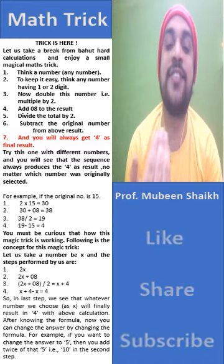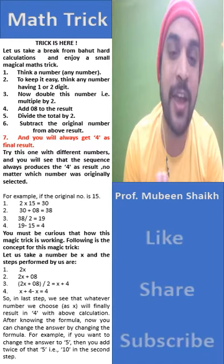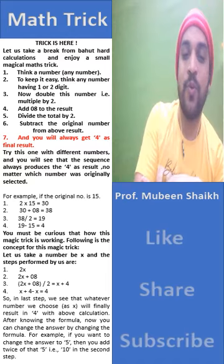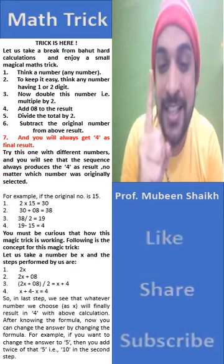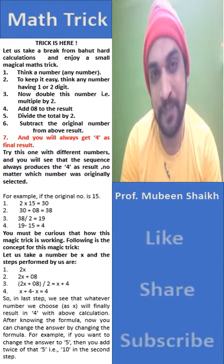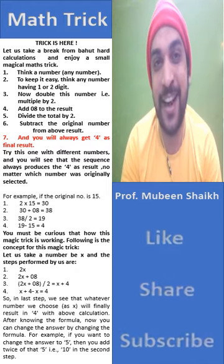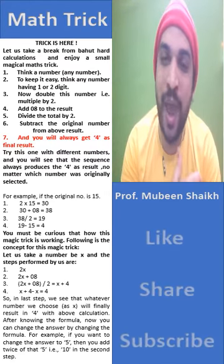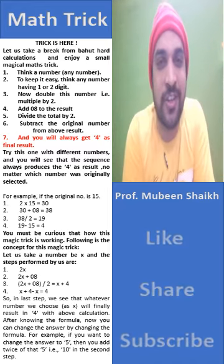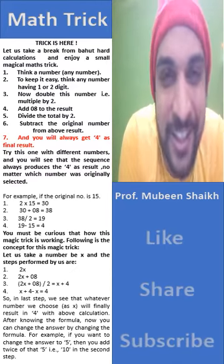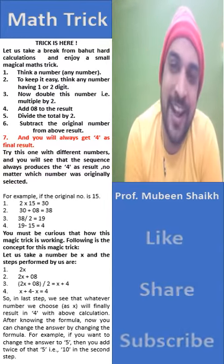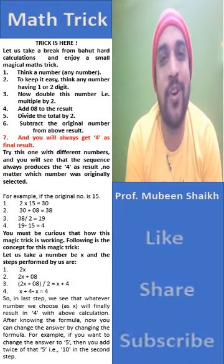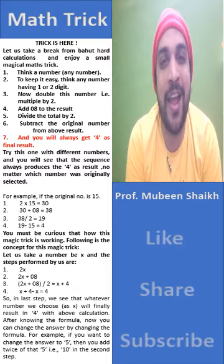Now that you know the formula, you can change the answer by changing the formula. For example, if you want the answer to be 5, then add twice of 5 — that is, add 10 — in the second step. The second step holds the secret of this mathematical trick. Have fun and share this trick with your kids, friends, and family!